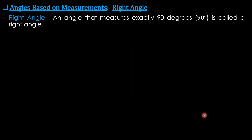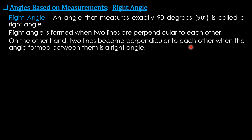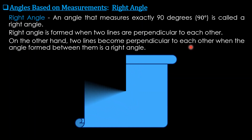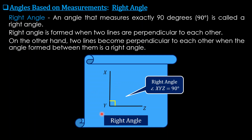A right angle is an angle that measures exactly 90 degrees. A right angle is formed when two lines are perpendicular to each other. On the other hand, two lines become perpendicular to each other when the angle formed between them is a right angle. In this figure, angle XYZ equals 90 degrees — so lines XY and YZ are perpendicular to each other.